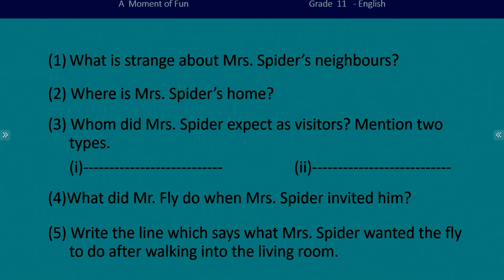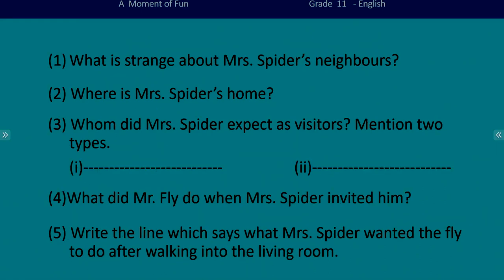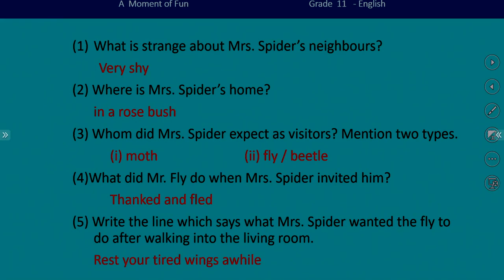Question number four: what did Mr. Fly do when Mrs. Spider invited him? The answer is he thanked and fled. What do you mean by 'fled'? Fled is the past tense of flee — flee means running away. The last question: write the line which says what Mrs. Spider wanted the fly to do after walking into the living room. The answer is: 'rest your tired wings a while.'